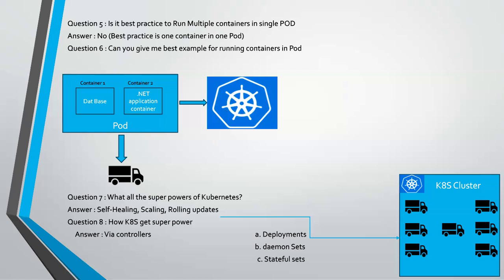What is a replica set? When your pod is having container one and container two — for example a .NET application and a database — you can create multiple copies of that pod. That is called a replica set. You can create multiple pod copies, meaning one application copy can be replicated many times and moved to the Kubernetes cluster.